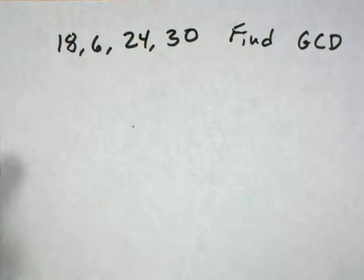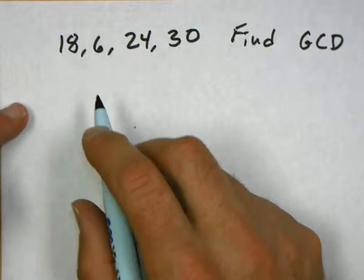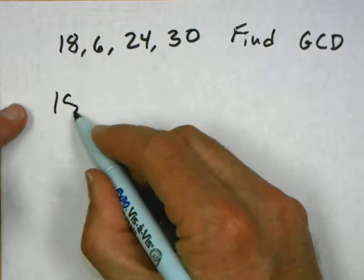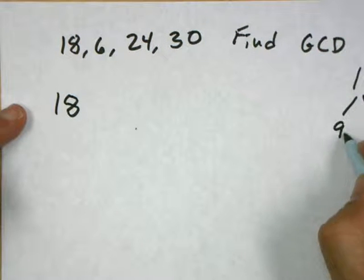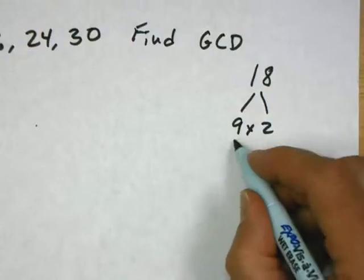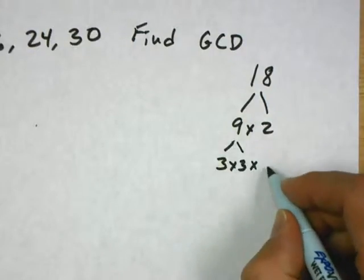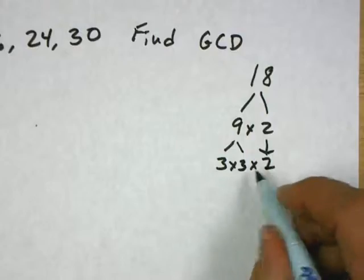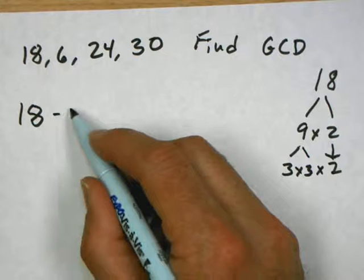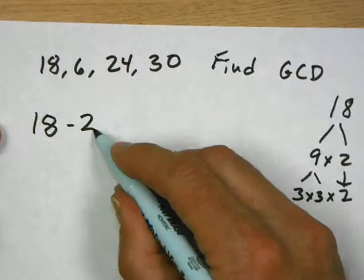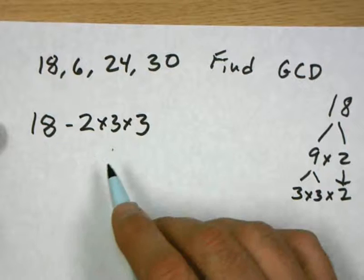One method is to write out all the factor trees of each number. So 18, you can do a full factor tree and then write it as a string of prime numbers multiplied together, or a string of prime factorizations. 3 times 3 times 2. So 18 is, you can write it in any order. I'm going to write it with the 2 first: 2 times 3 times 3. 2 times 3 is 6, 6 times 3 is 18, and these are all prime numbers.